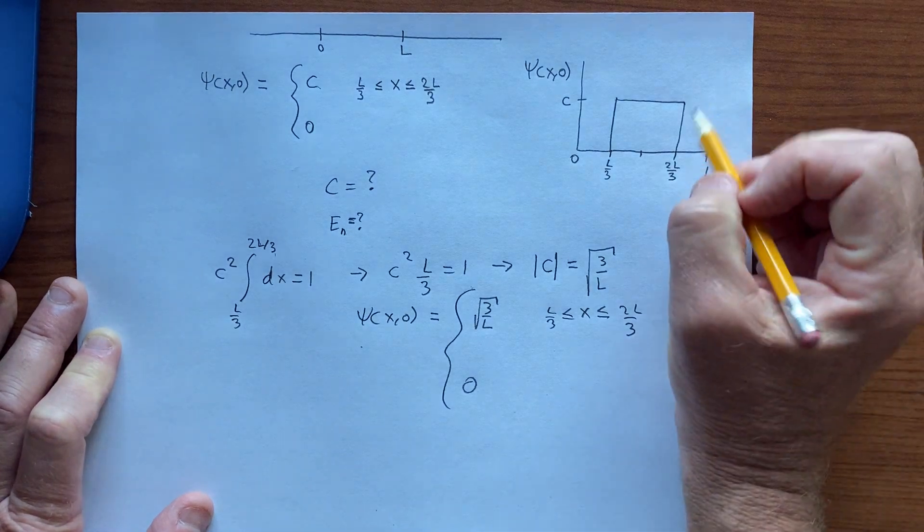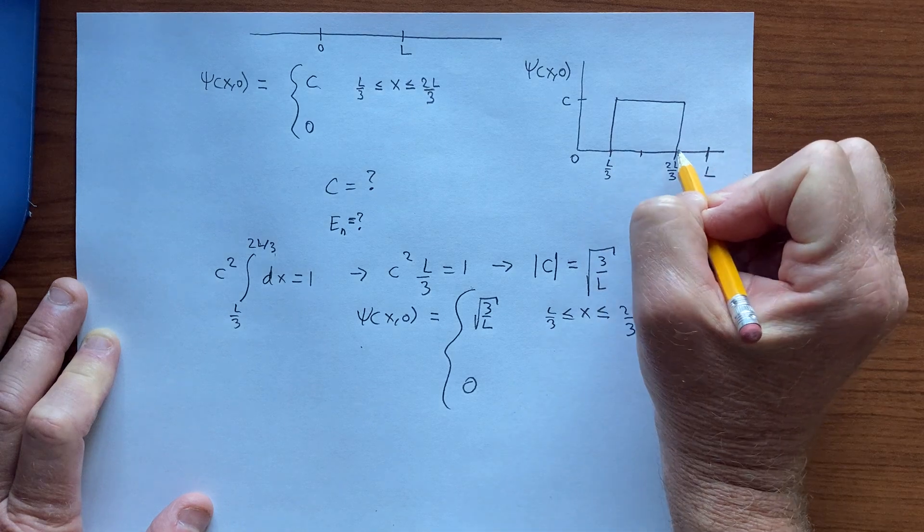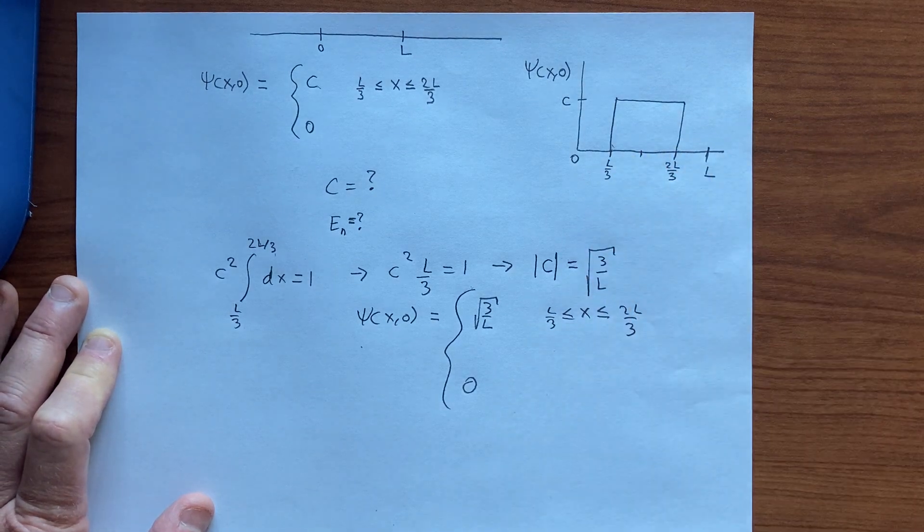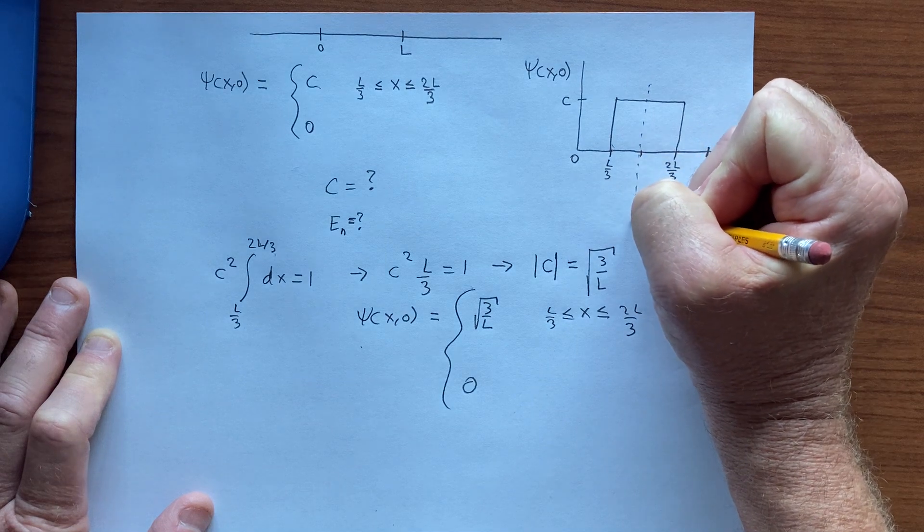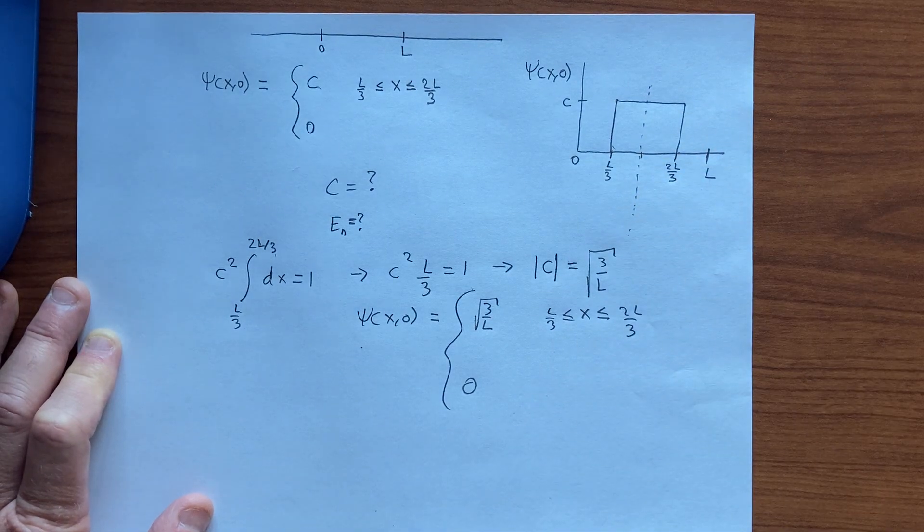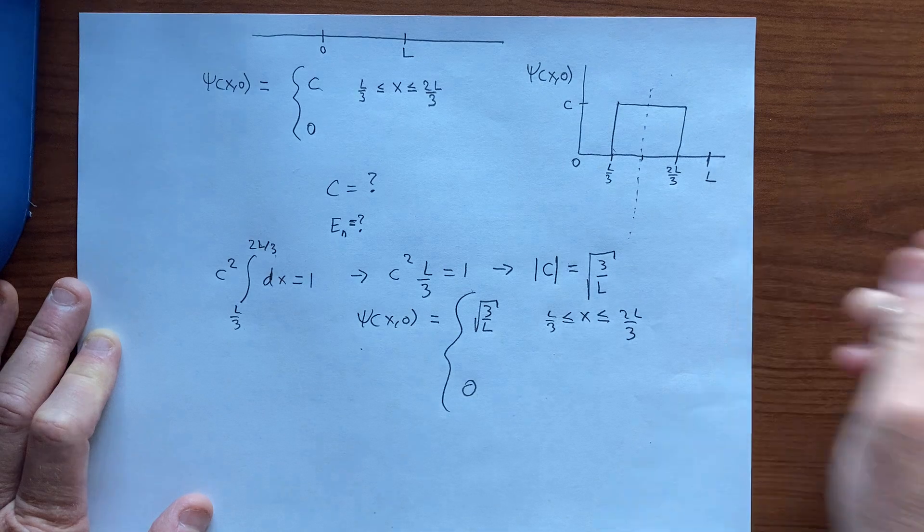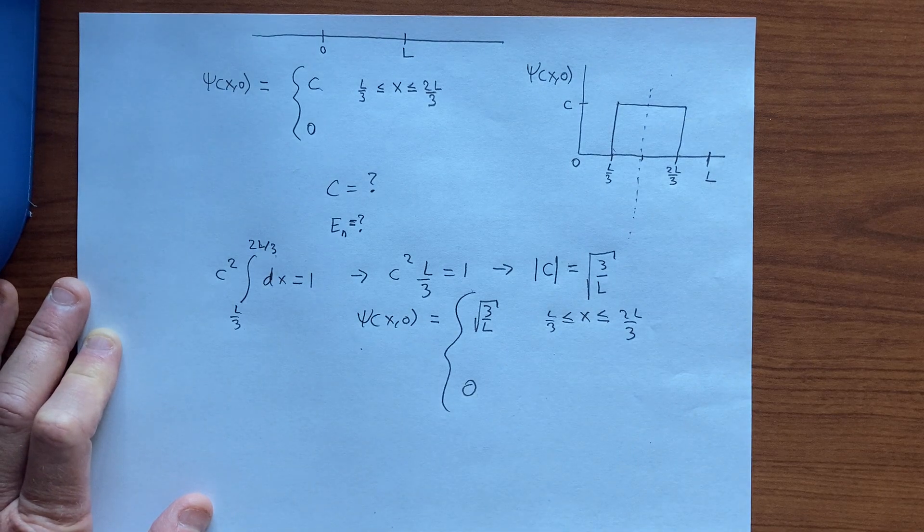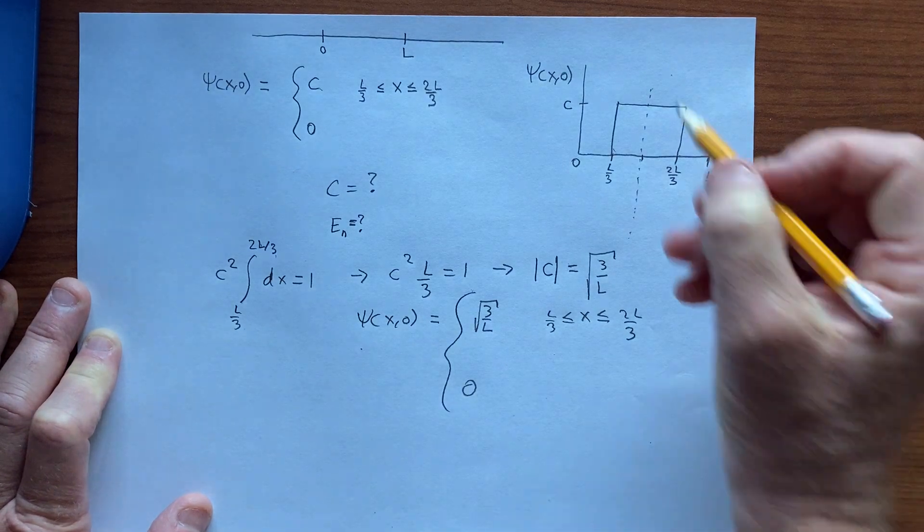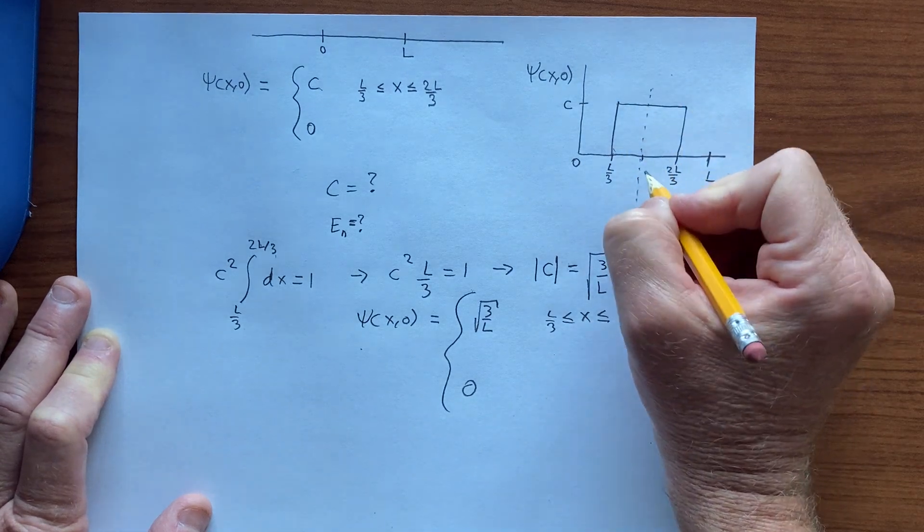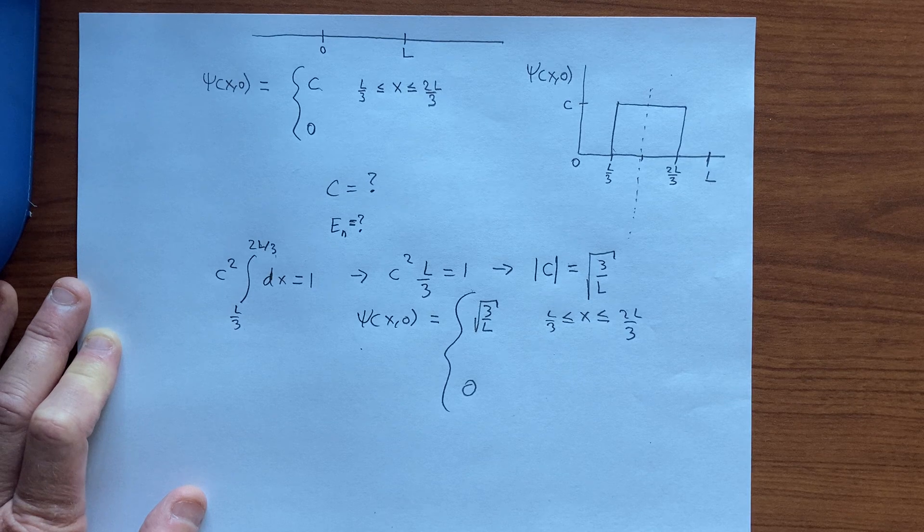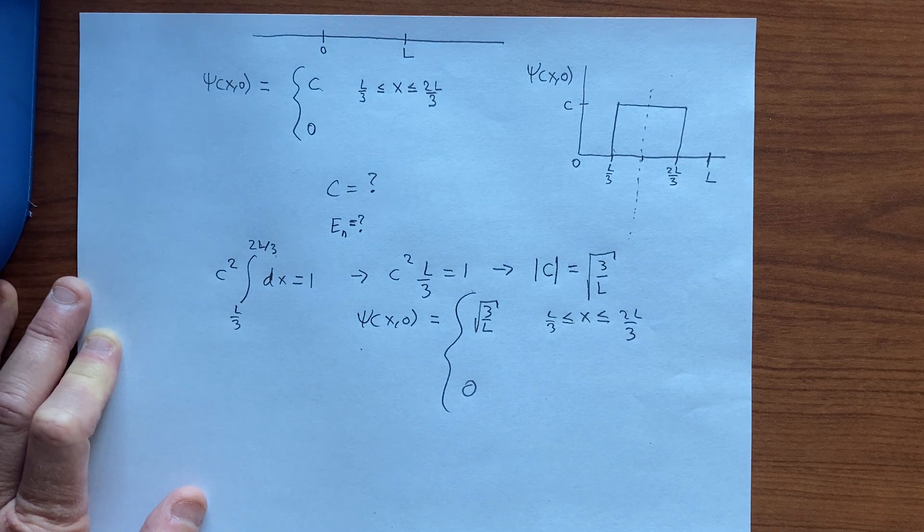And the thing to notice here is that the function that we have has a definite parity. So with respect to there, it looks exactly the same if we rotate the function about that axis. And so we need, this is going to be the result of an infinite sum over eigenfunctions with the same parity, namely even parity.